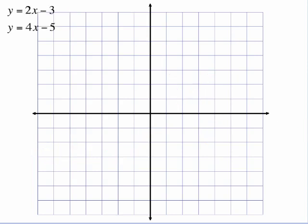Same thing here. We need to graph the first line. It has a y-intercept of negative 3 and a slope of 2, which is up 2 to the right 1. Next one has a y-intercept of negative 5 and a slope of 4, which is like 4 over 1 — up 4 over 1. There's my point of intersection.